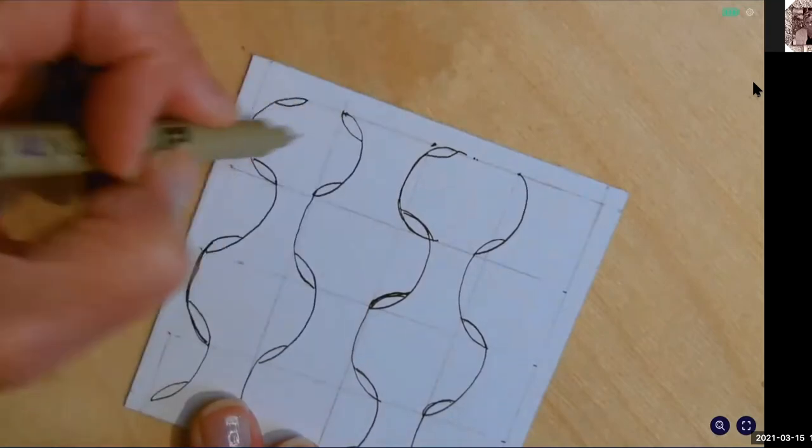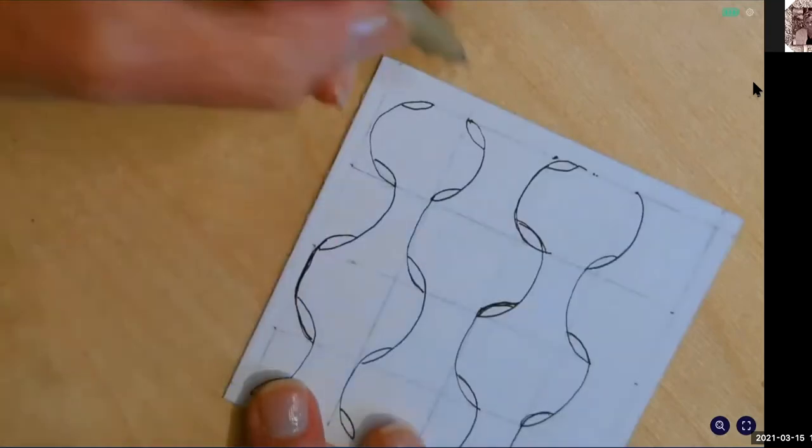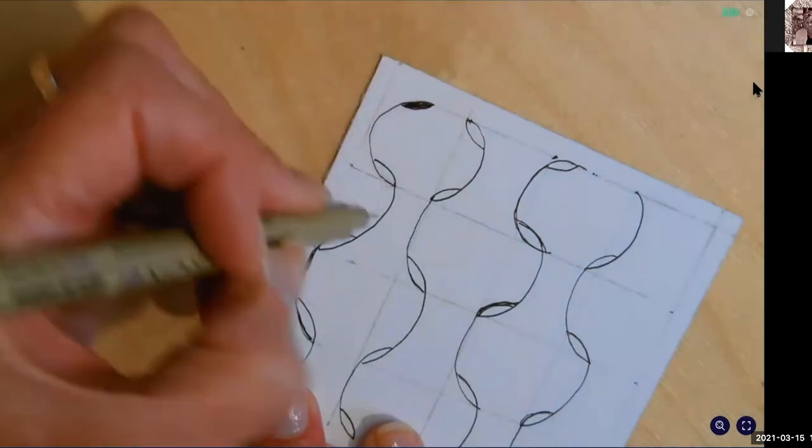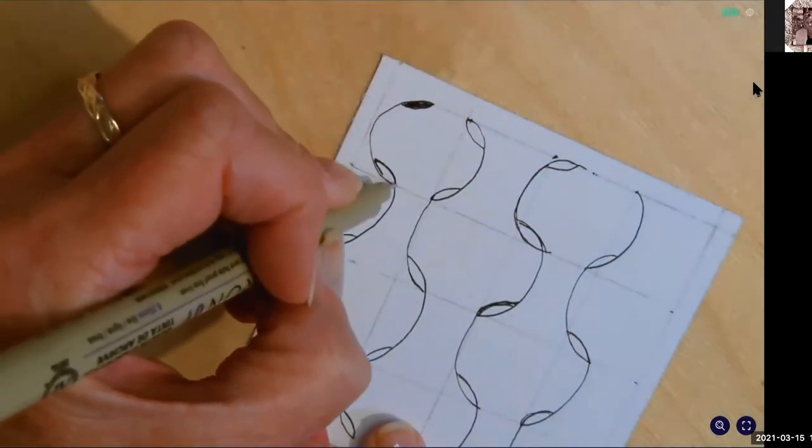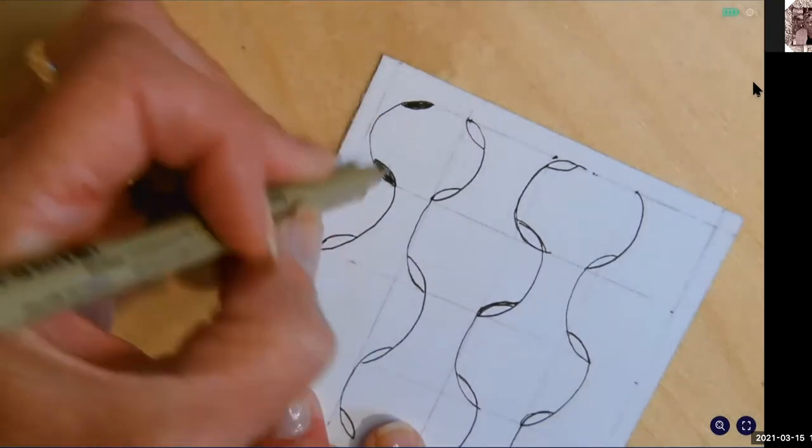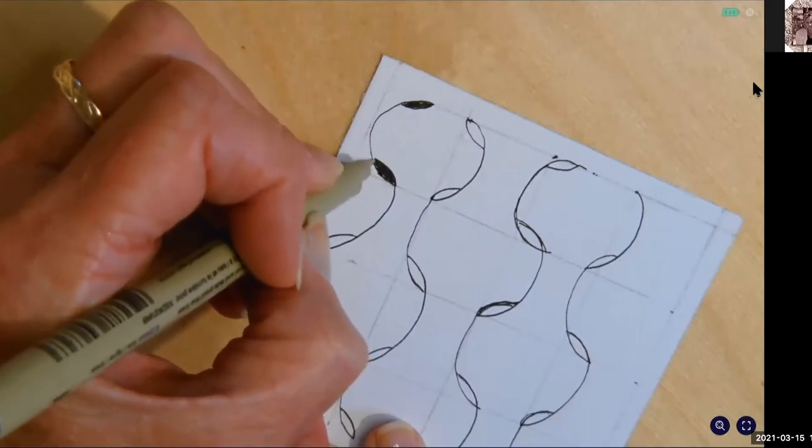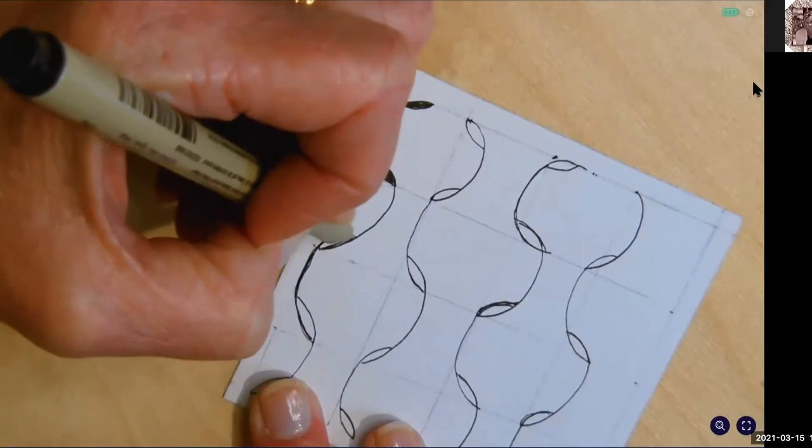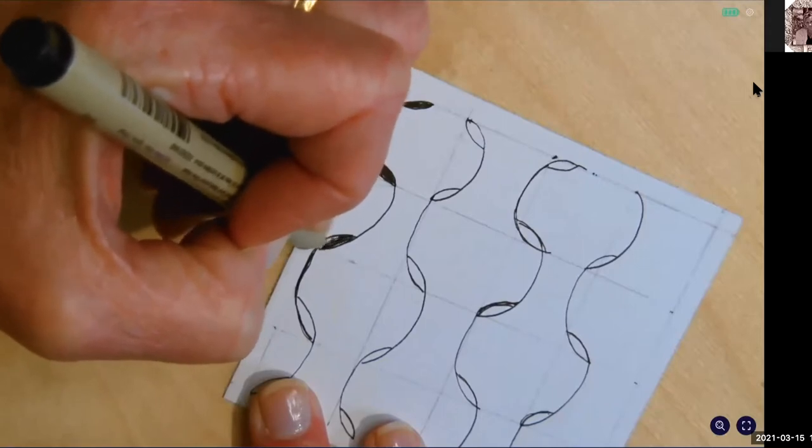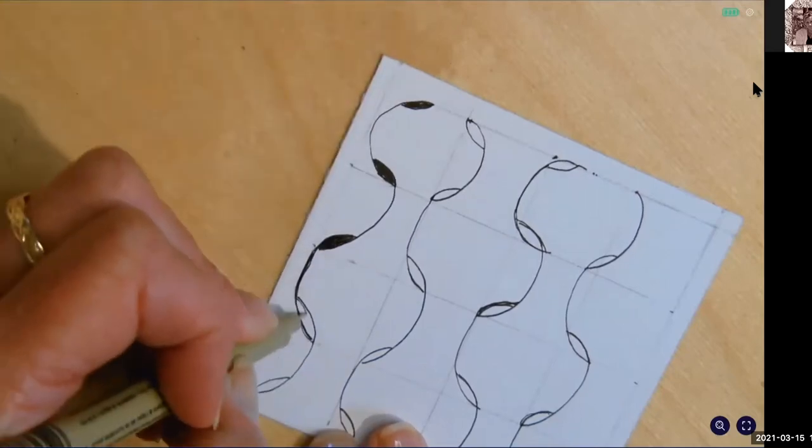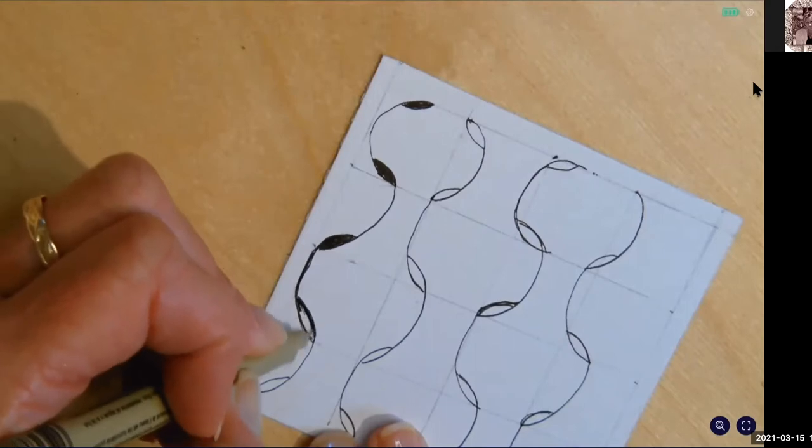I'm going to go back in and I'm going to fill in these little seed shapes black. Take your time doing this and remember to keep a light touch with your pen so that you don't smash down the tip. It's easy to forget when you're doing the solid coloring to keep a light touch.